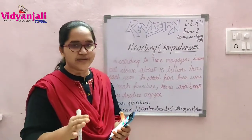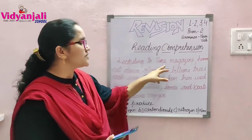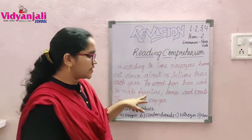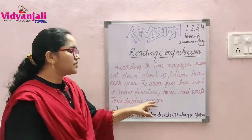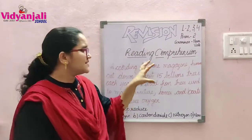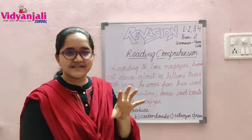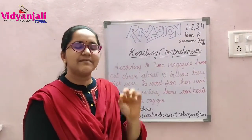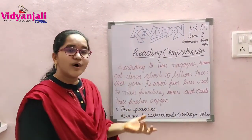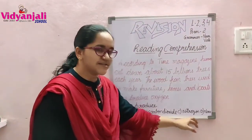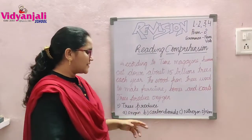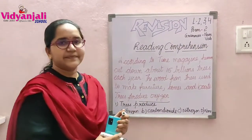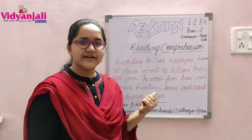Now, what is reading comprehension? You know that. So let's do this. According to Time Magazine, humans cut down about 15 billion trees each year. The wood from trees is used to make furniture, homes and boats. Trees produce oxygen. First time you have to read like a newspaper reading — we just read and go. Second time read a little bit slow, third time a little slow, then go to the questions. For example: Trees produce what? Oxygen, carbon dioxide, nitrogen, or none. The answer is oxygen — you see it in the passage. You don't write your own answer; see in the passage. Here we can see 'trees produce oxygen', so tick it. Reading comprehension you have to write like that.